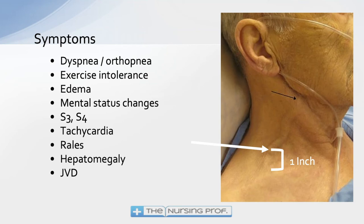Tachycardia, hepatomegaly, and jugular venous distension are also signs. The diagram shows a gentleman with jugular venous distension — you can see that jugular vein filled all the way up. How we measure this is with the head of the bed at 30 degrees, then we measure how full that jugular vein is. We call it jugular venous distension if it is anything above one inch above the clavicle. In this case he's full almost to his jaw — that's a positive JVD.